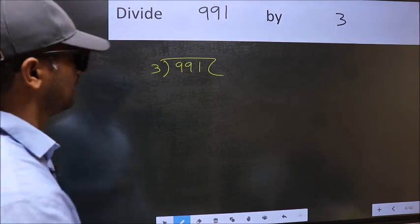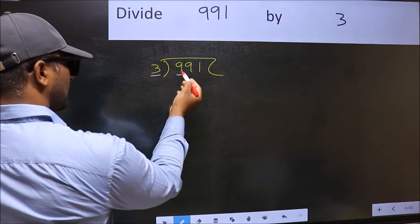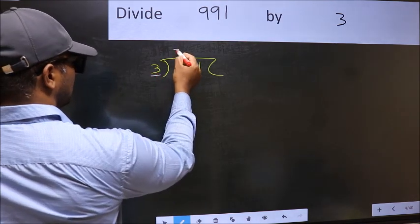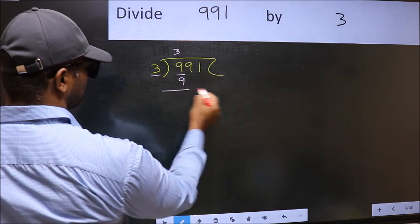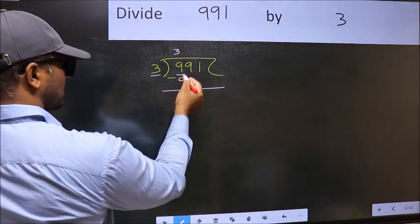Next, here we have 9 and here 3. When do we get 9 in 3 table? 3 times 3 is 9. Now you should subtract. 9 minus 9, 0.